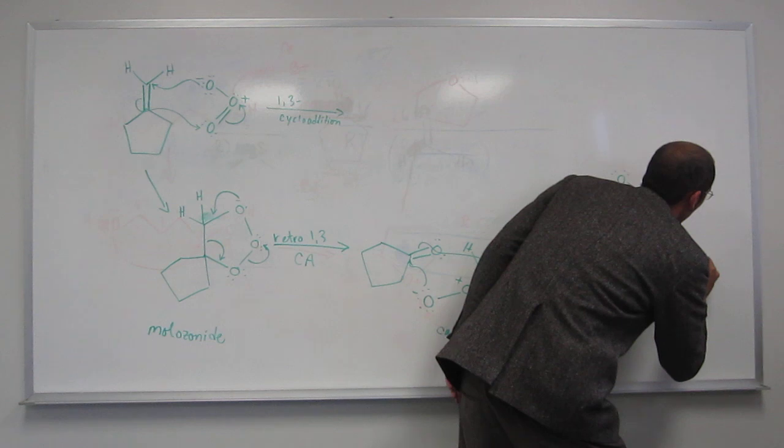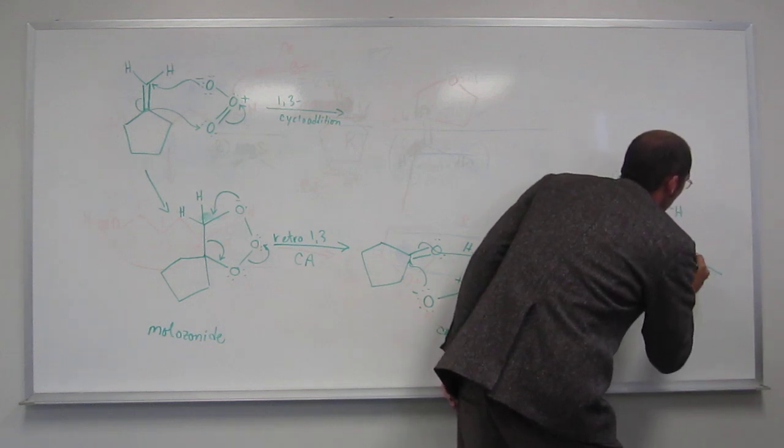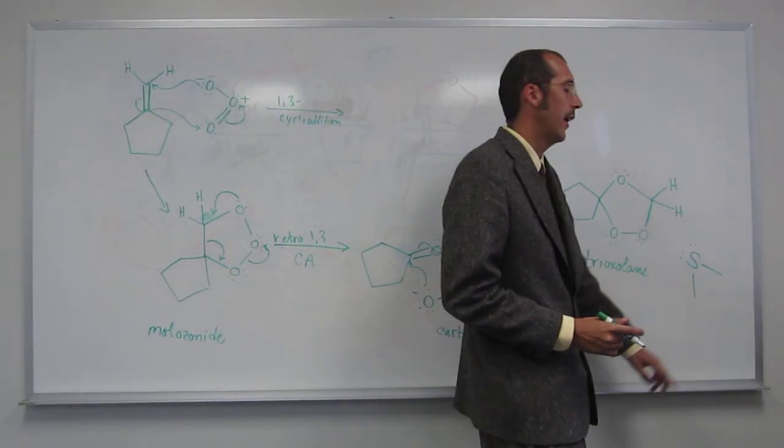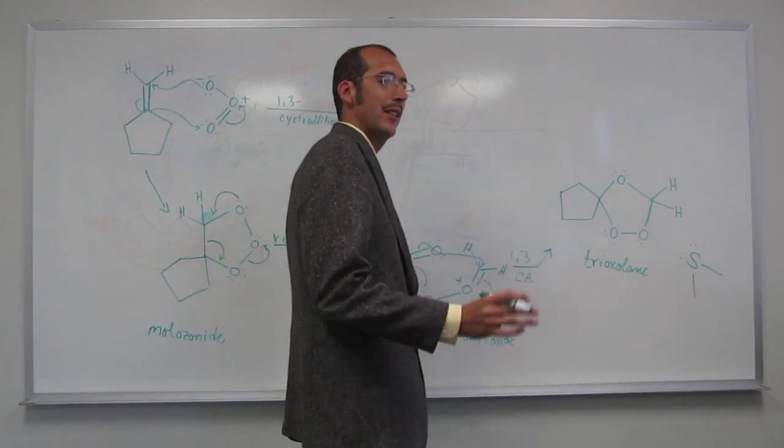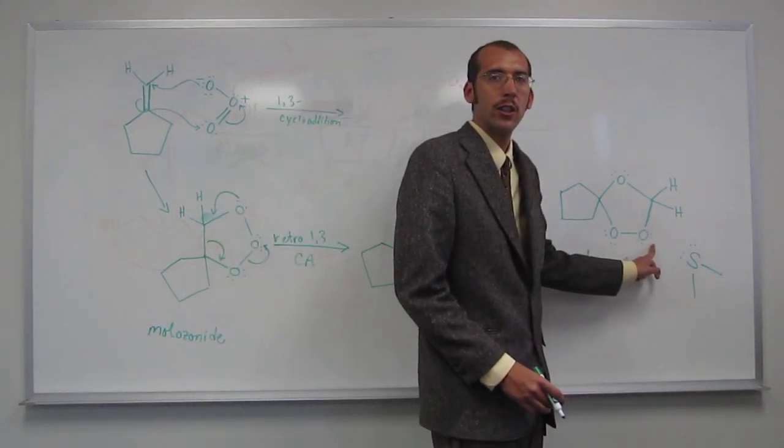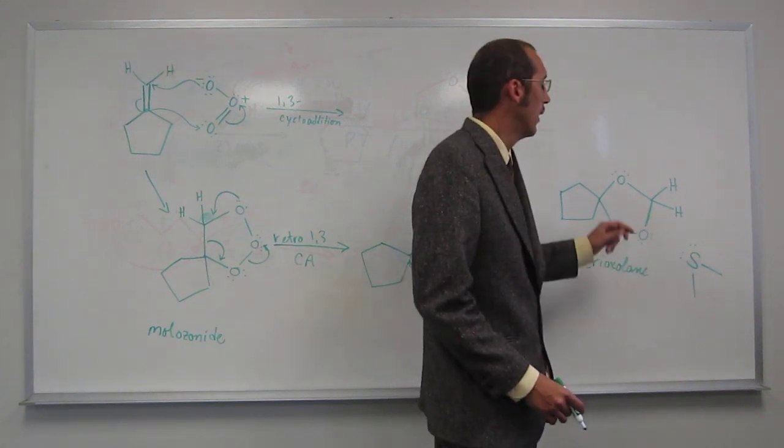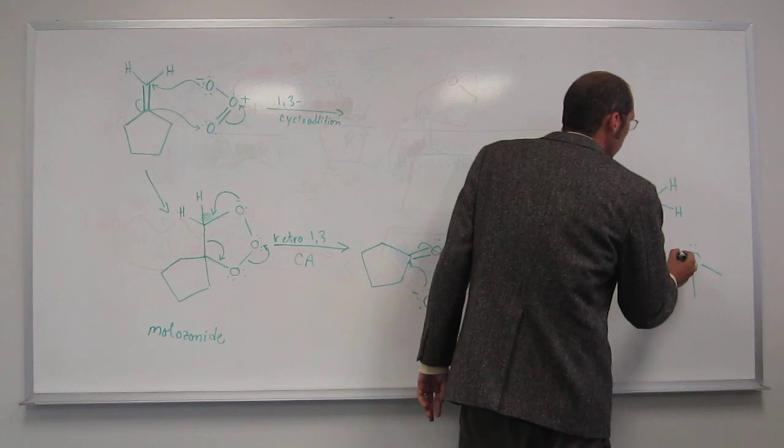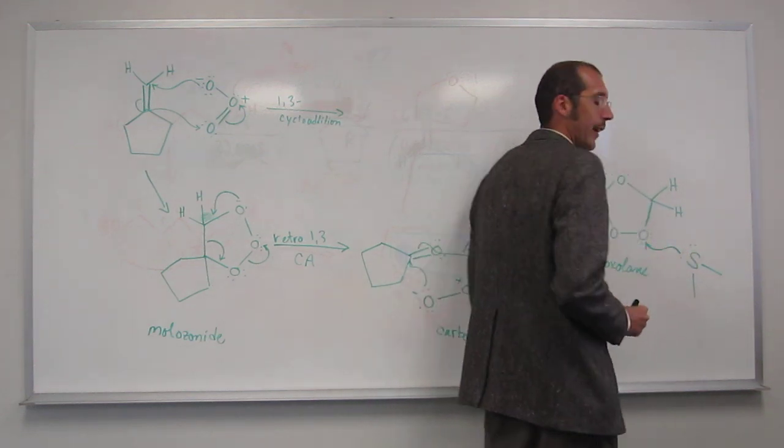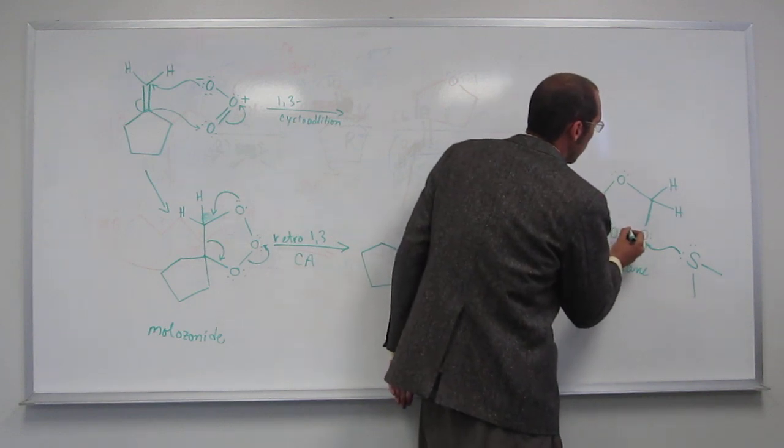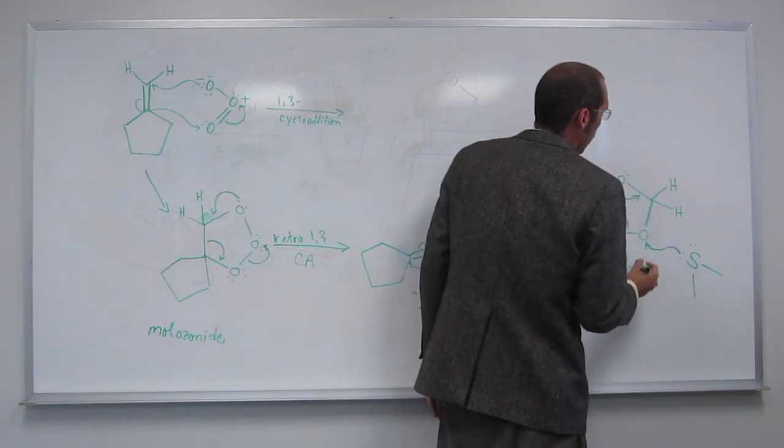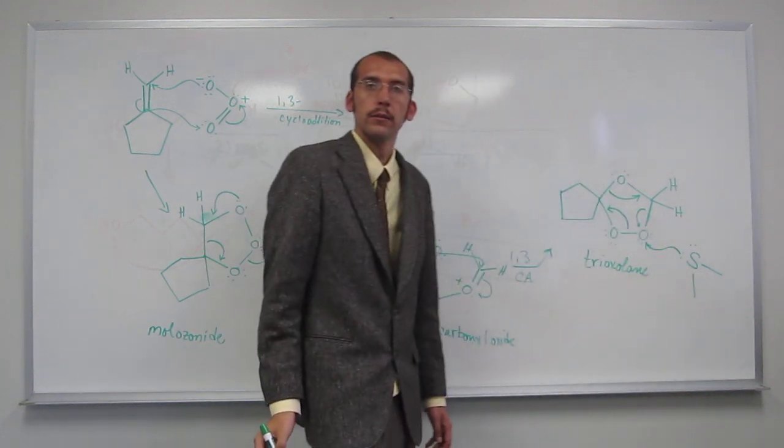So remember, DMS looks like this, dimethyl sulfide. It's very oxophilic, sulfur is. It likes to make sulfoxides from sulfides. So, again, like I was saying in class, I would probably prefer to attack this oxygen here because it's less sterically hindered than that oxygen there. But honestly, I probably wouldn't take off anything if you attacked either one of them. And what would happen here is you would attack that oxygen there. These electrons will go there, like that. These electrons will go there, and these electrons will go there.